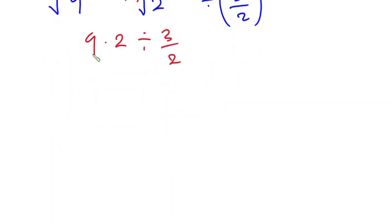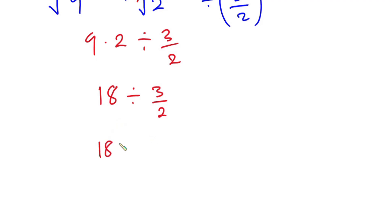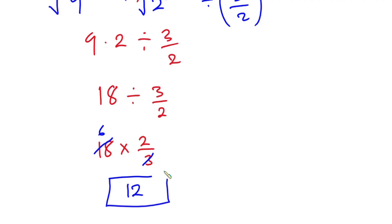9 times 2 is 18, then divided by 3 over 2, which is the same as 18 times 2 over 3. Then 3 goes into 18 six times, and 6 times 2 is 12. So 12 is our final answer. I hope you found this video useful — please give it a thumbs up and don't forget to subscribe to this channel.